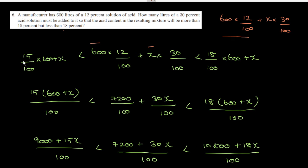So the inequality is: 15 into (600 plus x) divided by 100, less than 600 into 12 plus x into 30, divided by 100, less than 18 into (600 plus x) divided by 100.